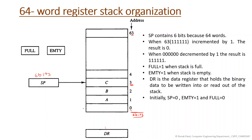Initially SP is at zero, then we insert items A, then B, then C. Right now the SP value is 3 — that is the address of the top value.